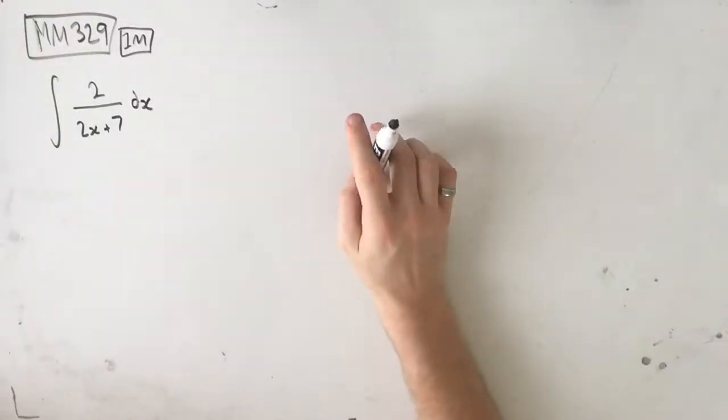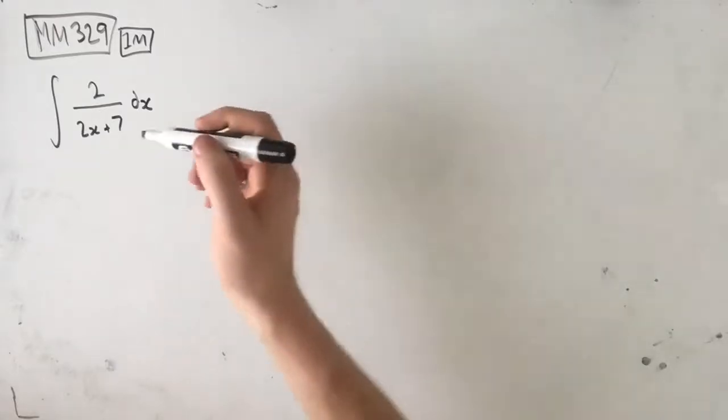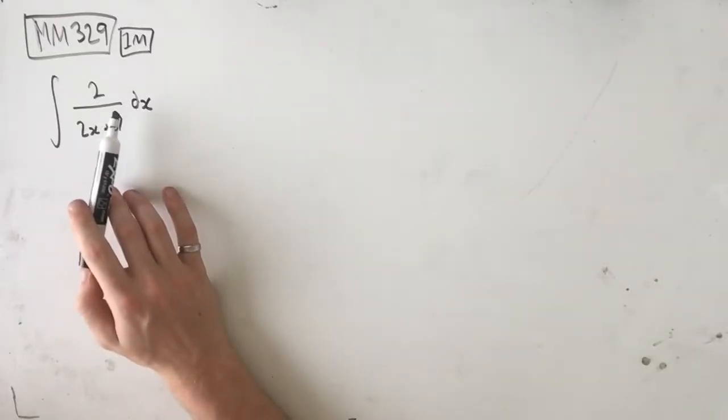Hey guys, welcome to question MM329 of the Maths Methods Fortify Study Guide. We've got this question that says, find an antiderivative of 2 over 2x plus 7 with respect to x.